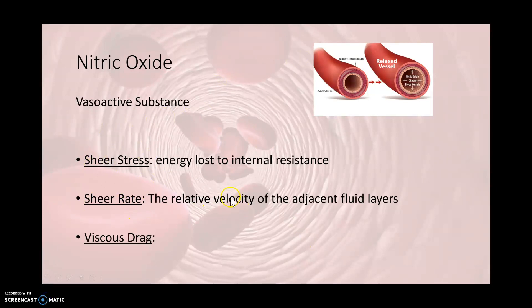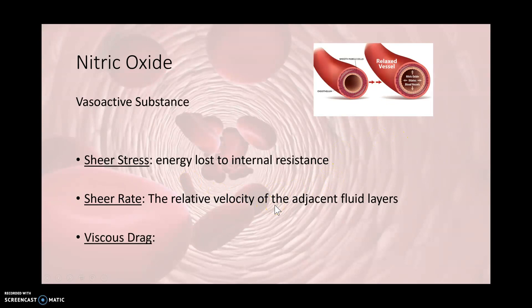Shear rate is the relative velocity of adjacent fluid layers — essentially how fast the fluid is going through the vessel. As we become more viscous, shear rate decreases. So as viscosity increases, shear rate decreases — the velocity is going to decrease the thicker our fluid is. The blood moving through the vessel will also have a tendency to want to pull on the endothelial lining with it. This is called viscous drag: as this thickened blood comes through the vessel, it wants to attach and grab onto the endothelial lining and almost pull it along.